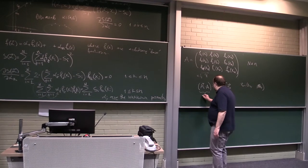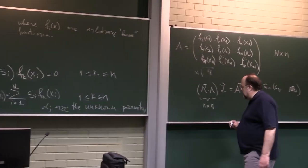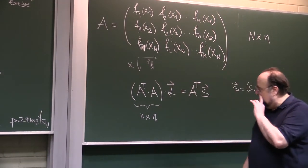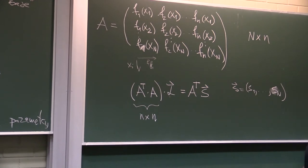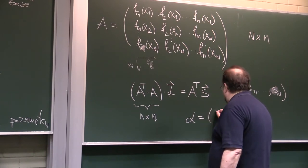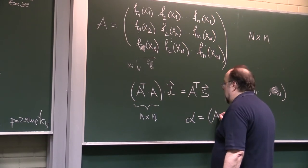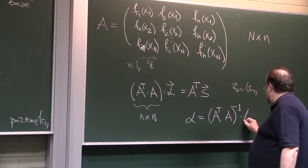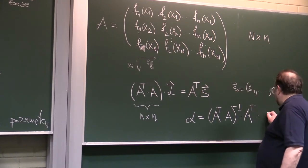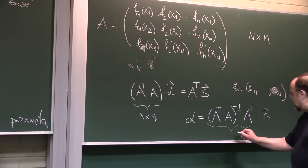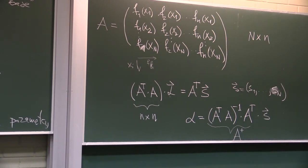Now if your functions are linearly independent, this will always result in a matrix of size n times n, and if the functions are linearly independent, this product will be a non-singular matrix and you can invert it, and you get that alpha is equal to A transpose A inverse times A transpose times the samples. And this guy here is usually denoted as A plus, and it's called the pseudo-inverse of matrix A.